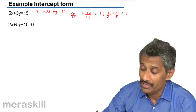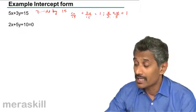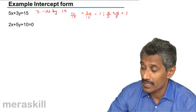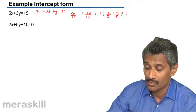So the same equation we have written it in the two-intercept form where x upon x-intercept 3 plus y upon y-intercept 5 is equal to 1.